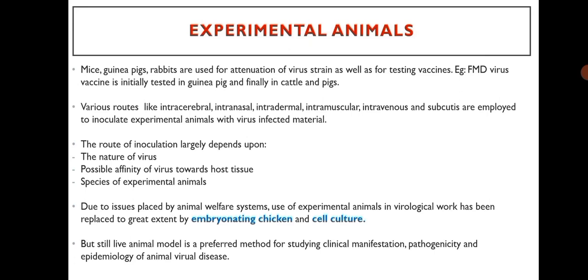Mice, guinea pigs, and rabbits are used for attenuation of virus strains as well as for testing vaccines. For example, FMD virus vaccine is initially tested in guinea pigs and finally in cattle and pigs. Various routes like intracerebral, intranasal, intradermal, intramuscular, intravenous, and subcutaneous are employed to inoculate experimental animals with virus infected material. The route of inoculation largely depends upon the nature of the virus, possible affinity of virus towards host tissue, and species of experimental animal.